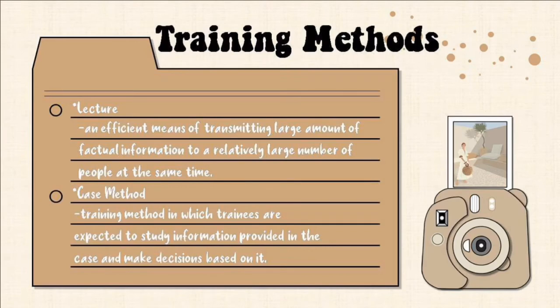Now let us proceed to the training methods. The first one is lecture. It is an efficient means of transmitting large amounts of factual information to a relatively large number of people at the same time. As mentioned earlier, it is actually a type of off-the-job training. It is a traditional method of teaching and is used in many training programs. A skilled lecturer can organize material and present it in a clear and understandable way.